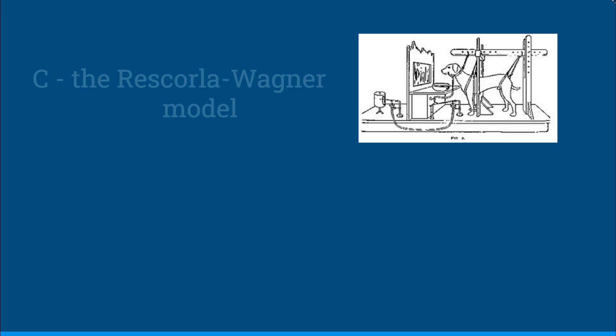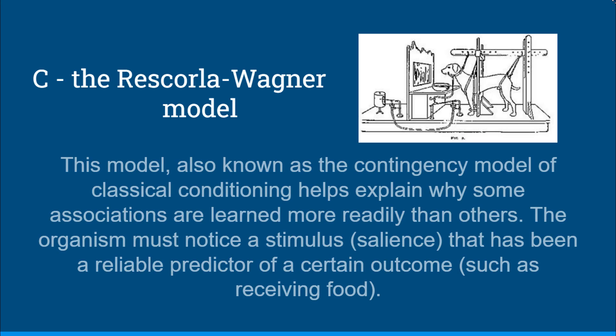And this would be C, the Rescorla-Wagner model. This model, also known as the contingency model of classical conditioning, helps explain why some associations are learned more readily than others. The organism must notice the stimulus — so it should be salient — and it also needs to be a reliable predictor of a certain outcome, such as receiving food.